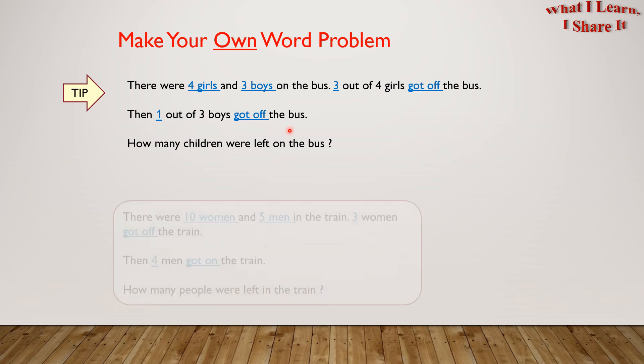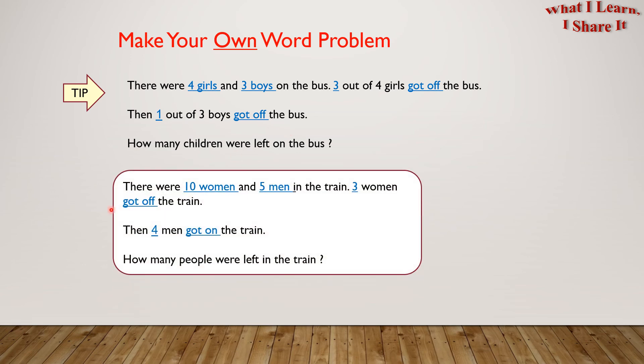Here is mine. There were 10 women and 5 men in the train. Three women got off the train. Then four men got on the train. How many people were left on the train? Are you excited to make your own word problems?